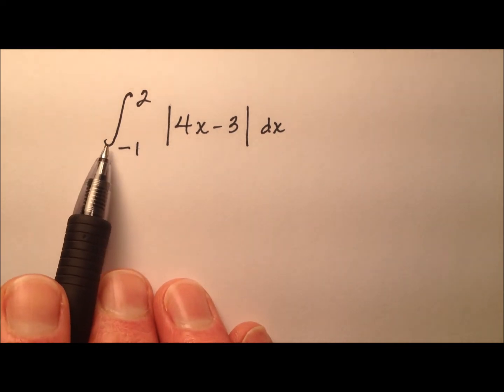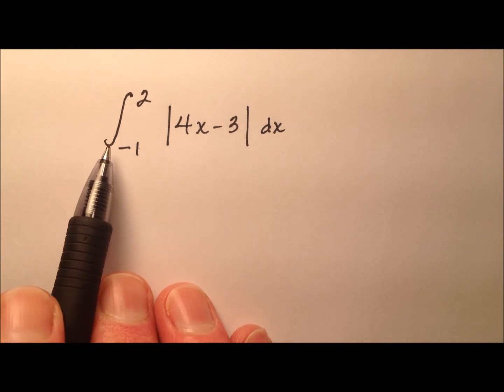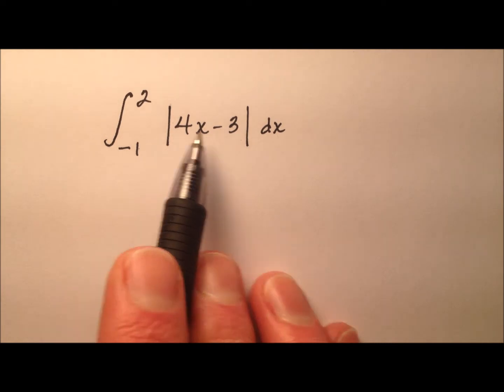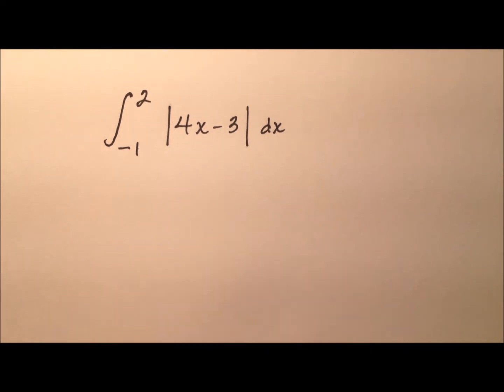So recall one additional piece of information. Whenever we're doing definite integrals, what we're doing is trying to evaluate or find the area of the region between the x-axis and the graph of our function. So let's go ahead and start by looking at the graph of this absolute value function and the shaded region for which we're finding the area.